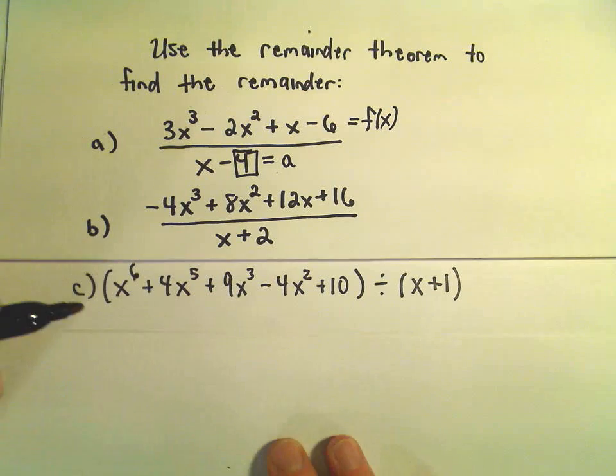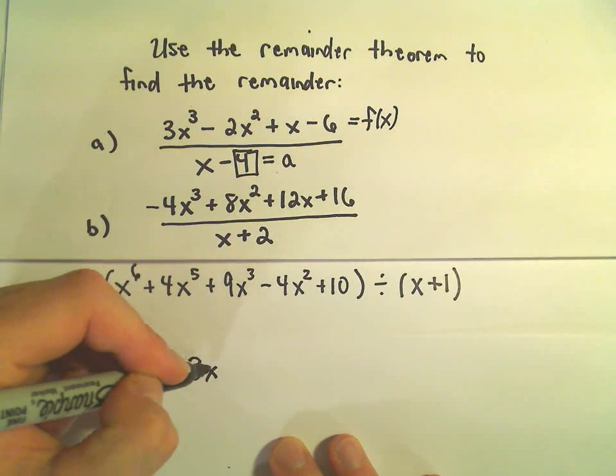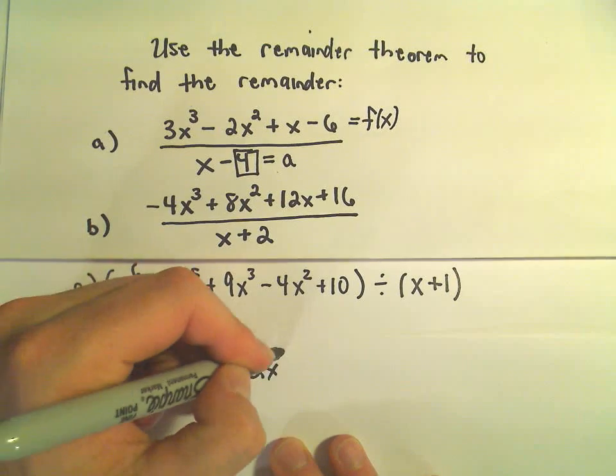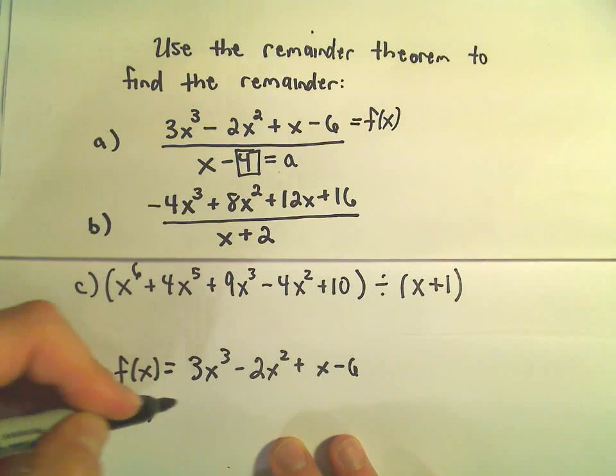whatever you're subtracting. So if we have the function f(x) = 3x³-2x²+x-6, if you want to find the remainder when you divide by x-4, just plug 4 in.